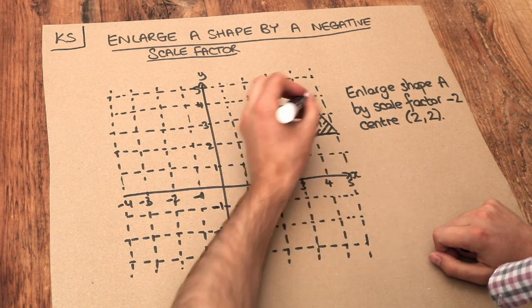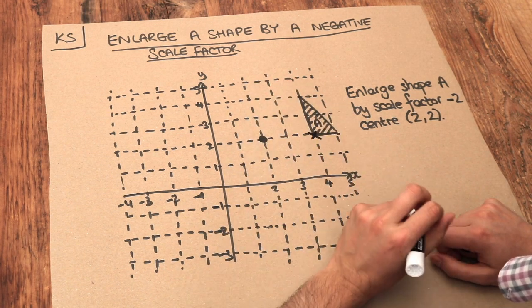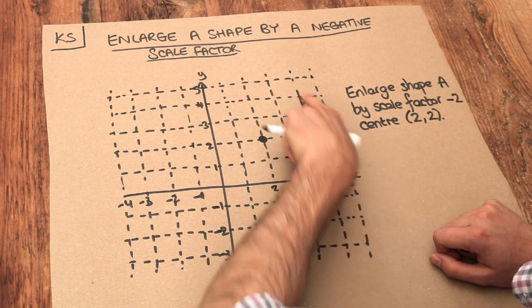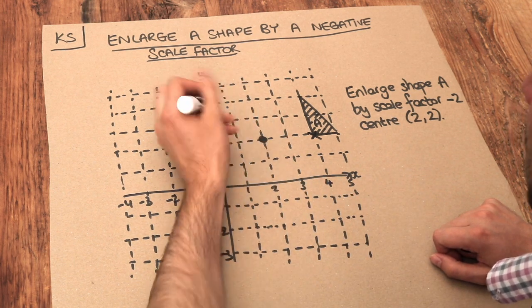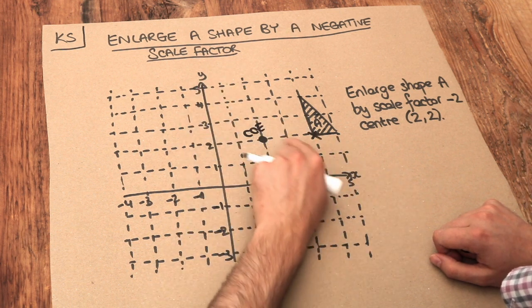to each of the points on this shape. So let's take this point first on this shape and then we're going to look at that point and then that point. Now always starting from the centre of enlargement, I'm just going to label that as centre of enlargement but you don't need to label it.